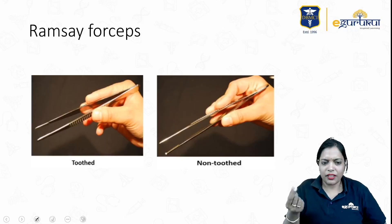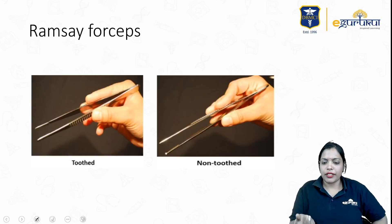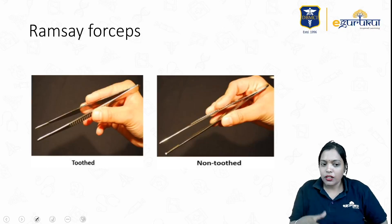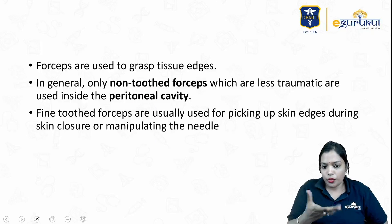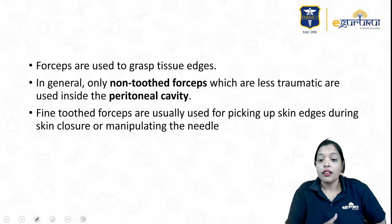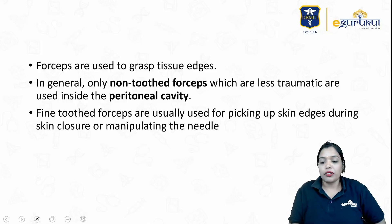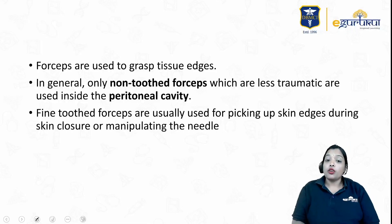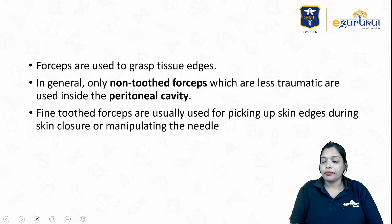These are some forceps — Rampley's forceps, tooth and non-tooth. Non-tooth are atraumatic. Tooth are mainly used to pick up tissues and have a better grip. Forceps are mainly used to grasp tissue edges. Non-tooth are less traumatic, mainly used in peritoneal cavities. Tooth are for holding skin edges.